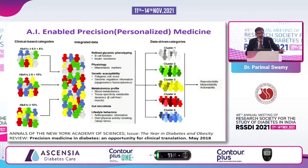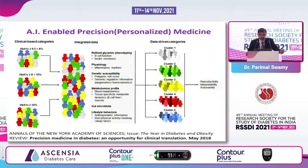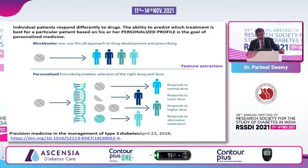AI is the first step behind personalized medicine. For a seemingly similar-looking patient population, AI can do cluster analysis — making clusters of patients based on glycemic phenotyping, physiology, genetic susceptibility, metabolic profile, gut microbiota, and lifestyle behavior. These clusters are used to make an informed decision not only about the dosage of medication, but about what kind of compound or molecule is effective for a given patient. This is truly personalized medicine for our diabetic patients.